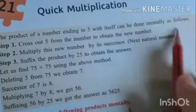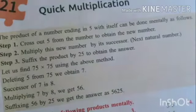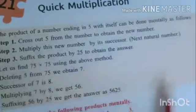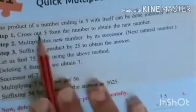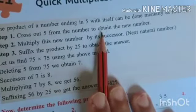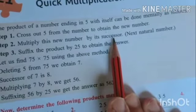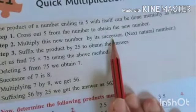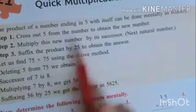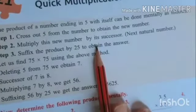Now let's go through this. What is quick multiplication? The product of a number ending in 5 with itself can be done mentally as follows. It's very easy. First step: cross out 5 from the number. Multiply this number by its successor. Successor means just one after, the next natural number. Then suffix the product by 25 to get the answer. I will show you this with an example.